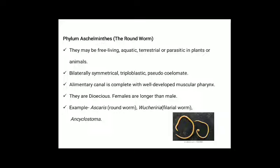Phylum Nematoda (Aschelminthes): they may be free-living, aquatic, terrestrial or parasitic in plants and animals. They are bilaterally symmetrical, triploblastic, pseudocoelomate. Alimentary canal is complete with a well-developed muscular pharynx. They are dioecious. Females are longer than males. Example: Ascaris. A diagram showing both male and female forms of Ascaris is provided.